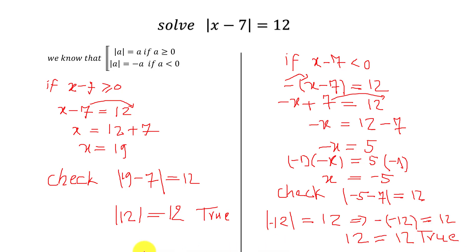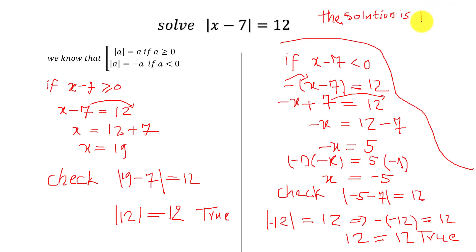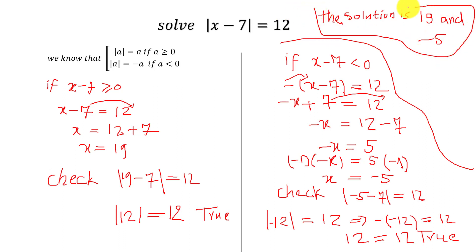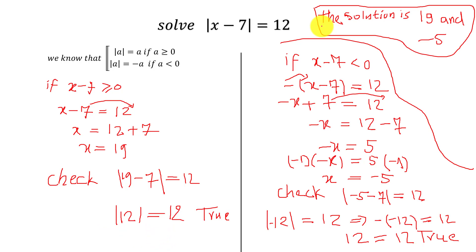So this equation has two solutions: x equals 19 and x equals negative 5. Okay, don't forget to share the video with your friends and don't forget to subscribe to the channel. Okay, bye bye!